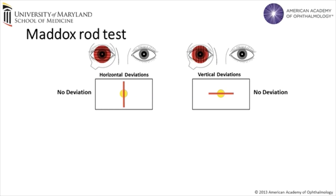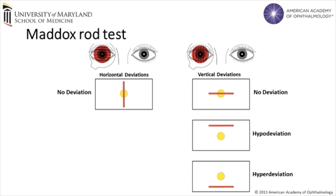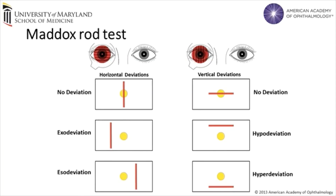If the white light is above the red line, a hyper deviation is present. If the white light is below the red line, a hypo deviation is present. Then the rods are rotated horizontally — in this example covering the right eye — to test for horizontal deviations. If the light is on the left side of the line, an eso deviation is present. If the light is on the right side, an exo deviation is present. To measure the amount of deviation, the examiner will use prisms of increasing power until the line superimposes the point.